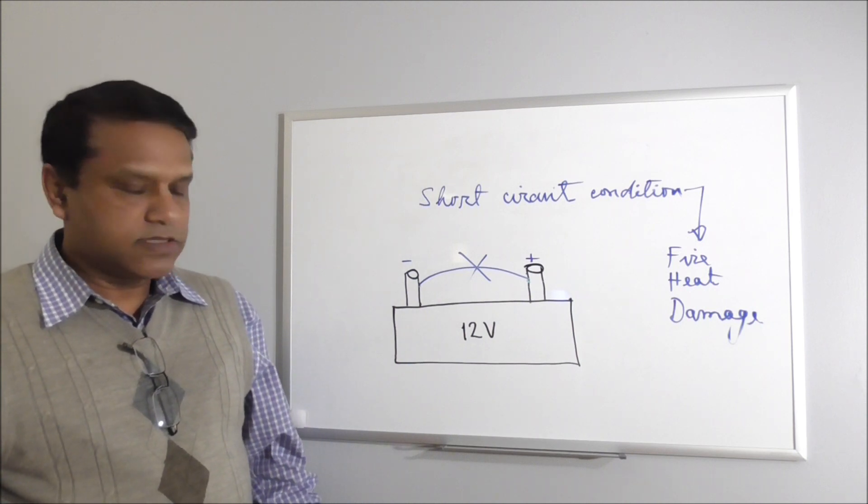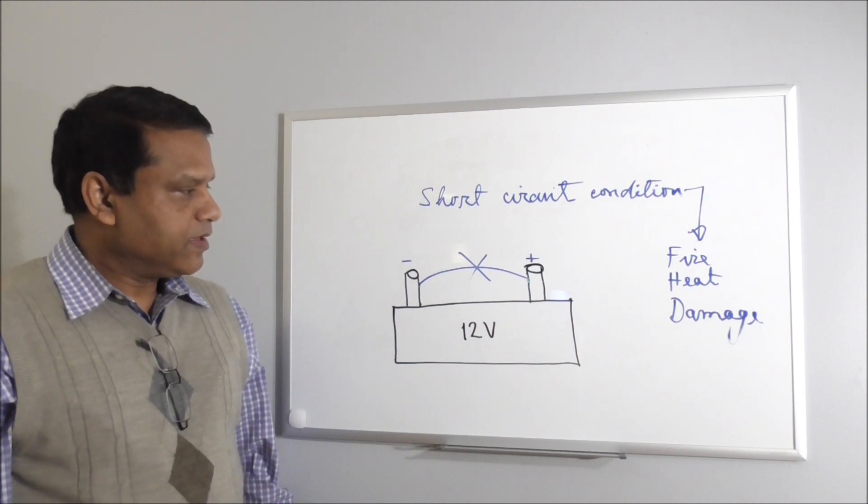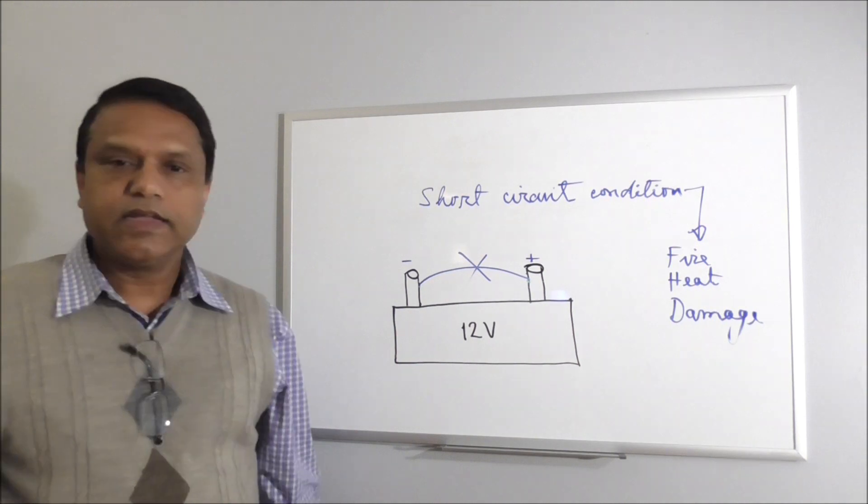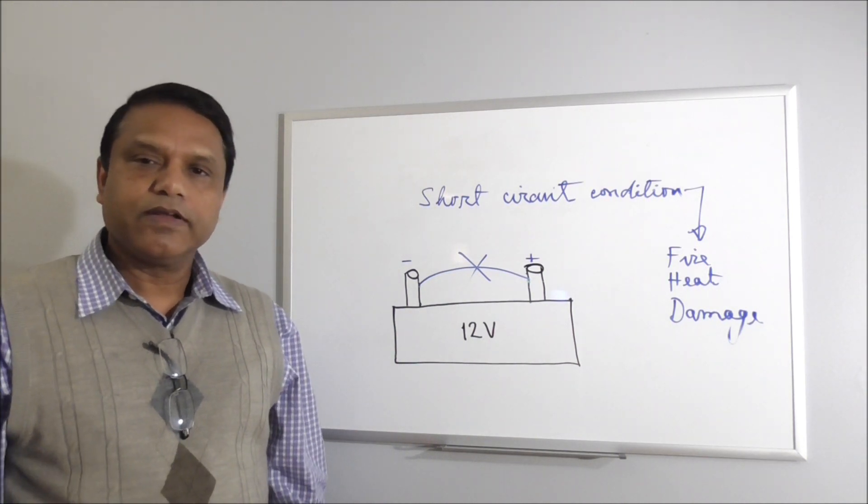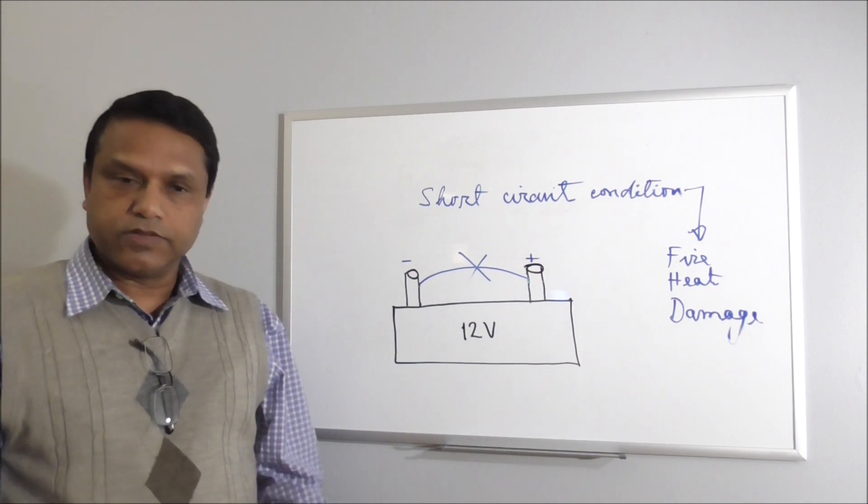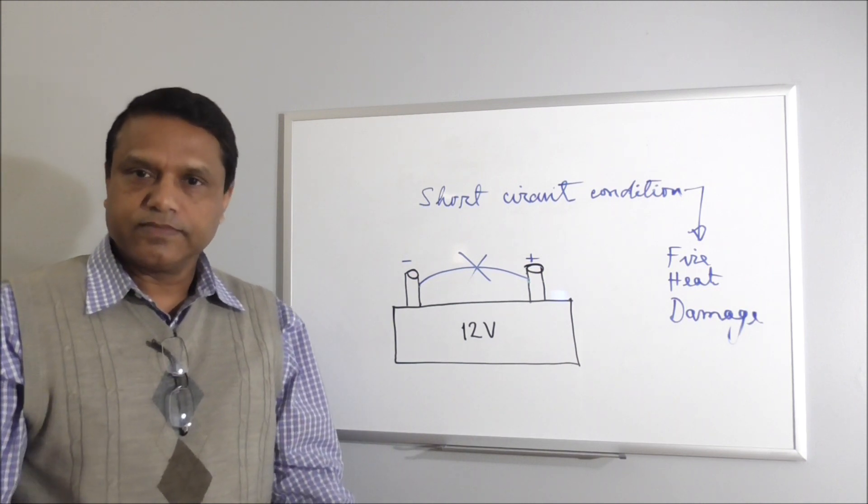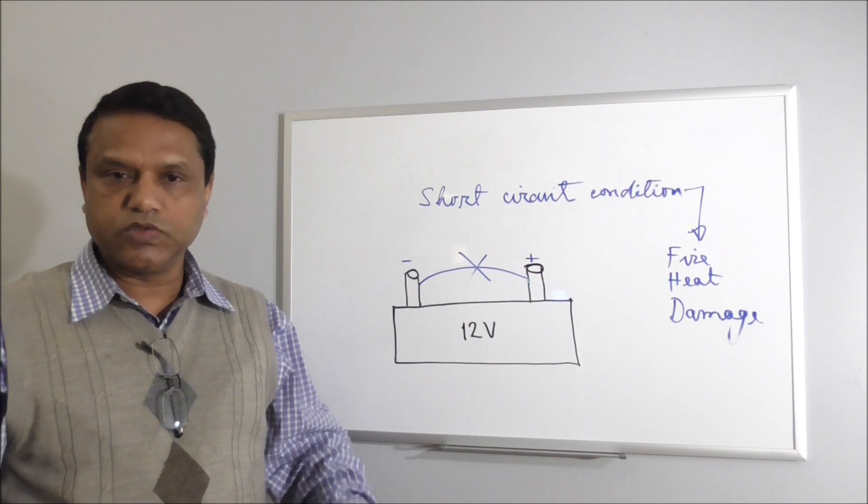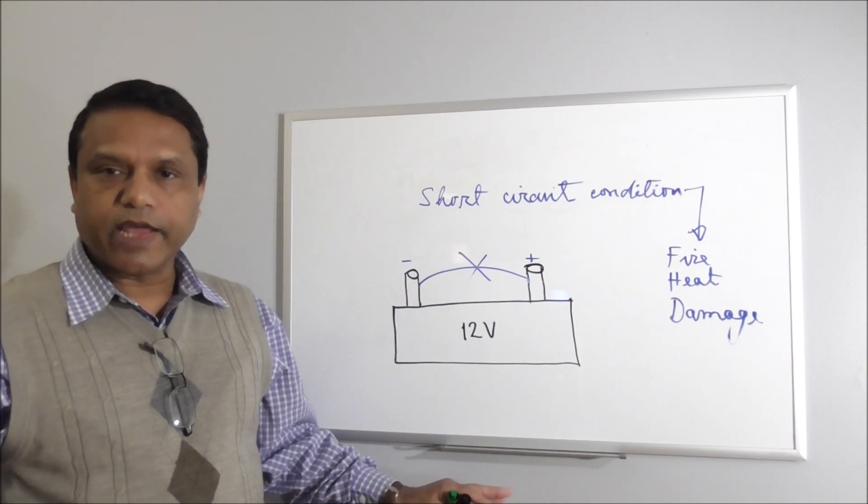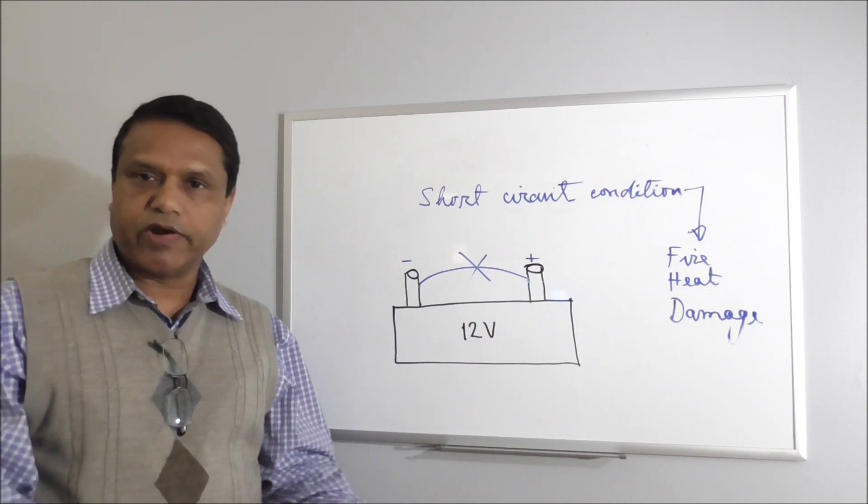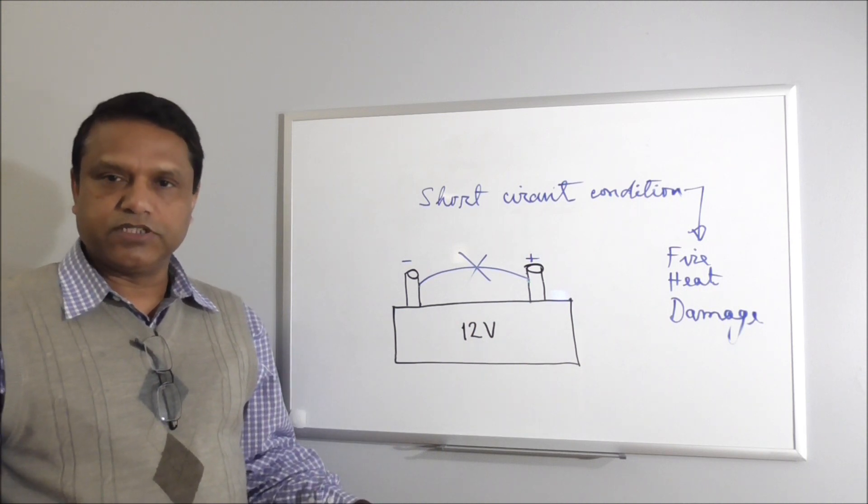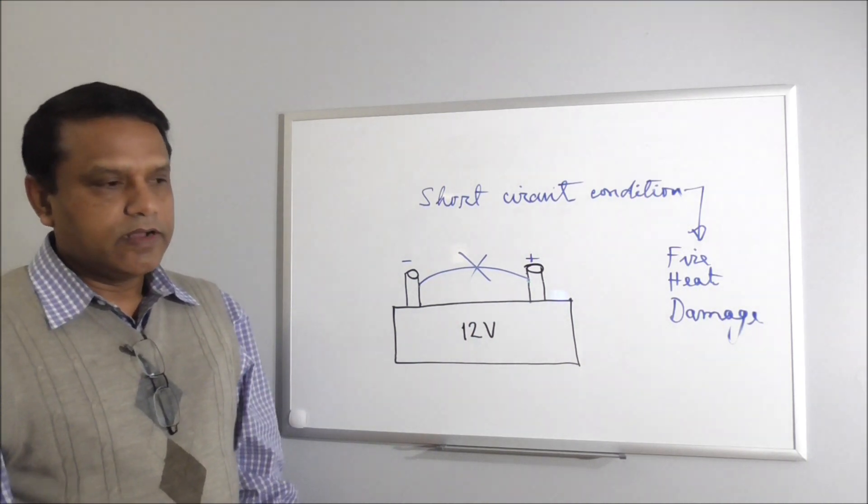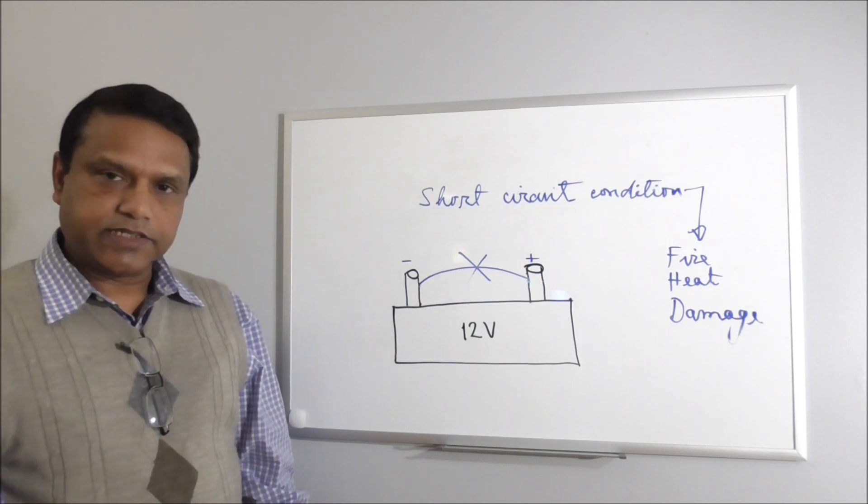Another thing we need to discuss in the context of voltage is zero voltage. Zero voltage is also sometimes called ground voltage. Ground or earth has no voltage because it is so big, you cannot really charge it up one way or another. It will always remain neutral. You cannot make it positively charged or negatively charged. And we use this very effectively in our circuits.